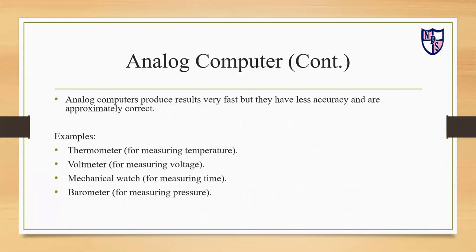Analog computers produce results very fast but they have less accuracy and are only approximately correct. Examples of analog computers: a thermometer for measuring temperature, a voltmeter for measuring voltage, a mechanical watch for measuring time, and a barometer for measuring pressure.